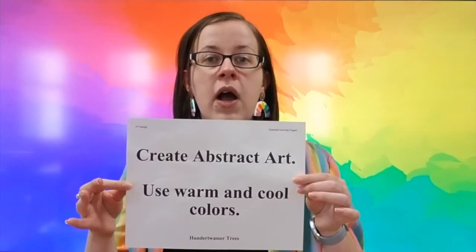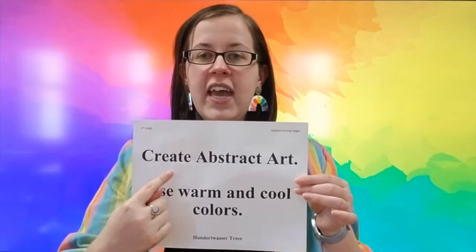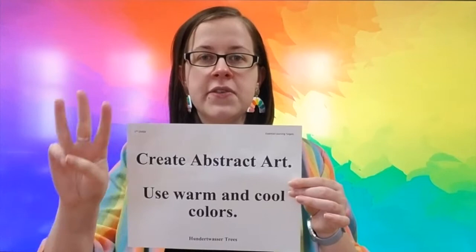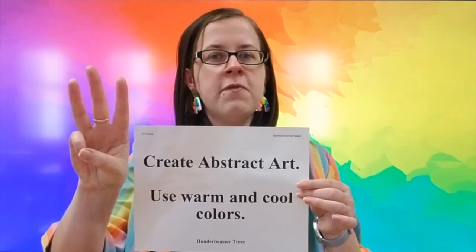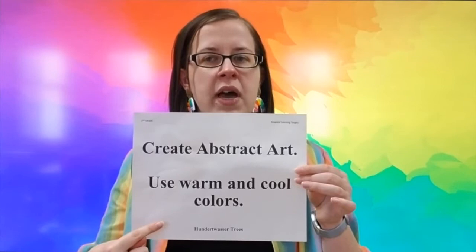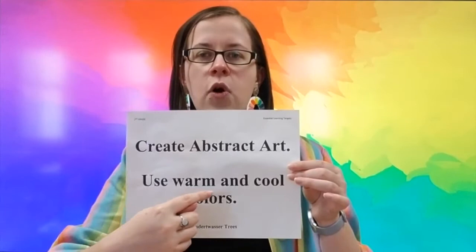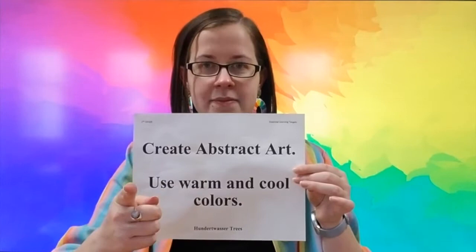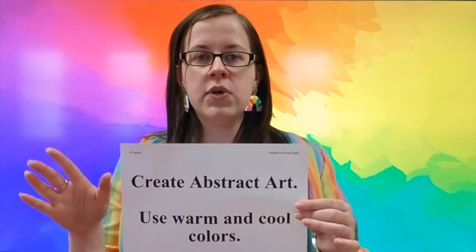We have a couple more steps to finish today on our artwork. But before we get our art materials ready, let's read our learning targets again. I will start first, you repeat after me. I can create abstract art. Remember, abstract art uses three things: lines, shapes, and colors. We're looking for some very specific colors today, so we need to read our second learning target. I can use warm and cool colors. Last week, you sorted out red, orange, and yellow into warm colors, and green, blue, and purple into cool colors.